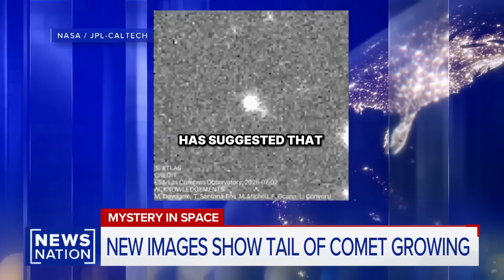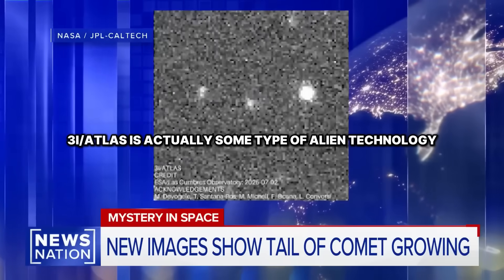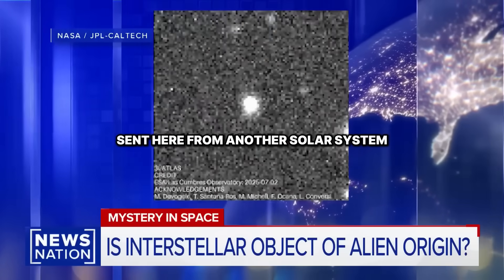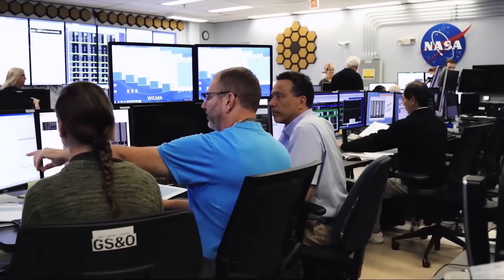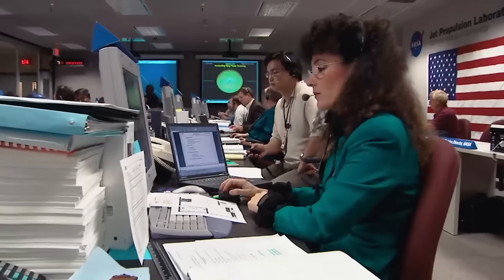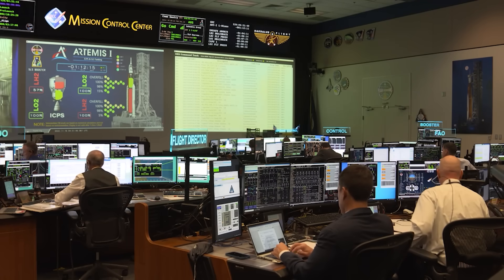Avi Loeb has suggested that 3i Atlas is actually some type of alien technology sent here from another solar system. The alarms first went off in the orbital modeling departments at NASA. The math, which is usually accurate enough to land a rover on a dime millions of miles away, was suddenly wrong.